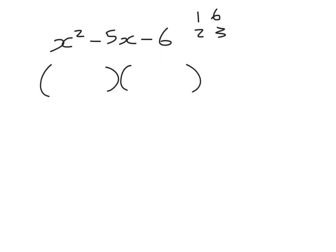That means that one of those factors, either the 2 or the 3, or the 1 or the 6, has to be negative. The other one has to be positive, because that's the only way you can multiply two numbers together to get a negative 6. At the same time, they need to add together to make negative 5.